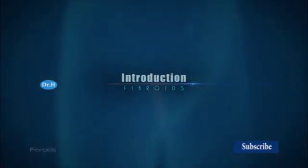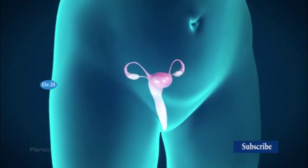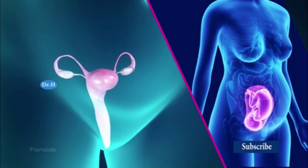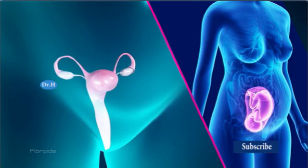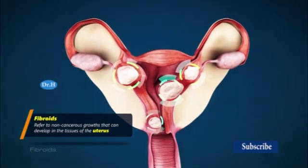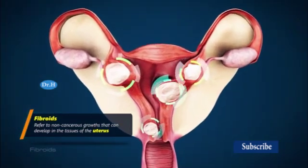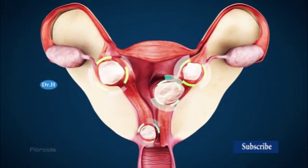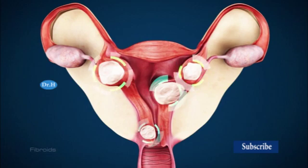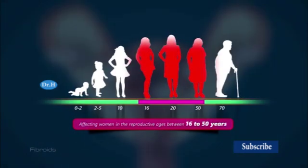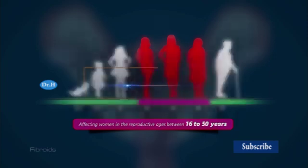Introduction. The uterus, also called the womb, is the female reproductive organ where a baby grows during pregnancy. Fibroids refer to non-cancerous growths that can develop in the tissue of the uterus. This is a common health condition affecting women in the reproductive ages between 16 to 50 years.